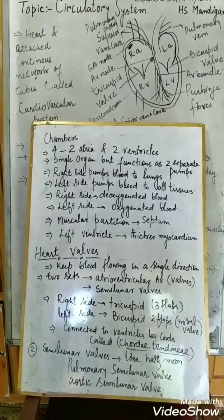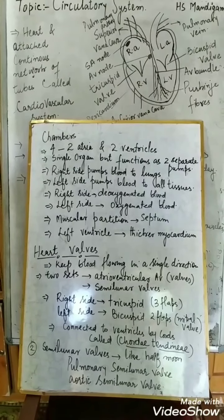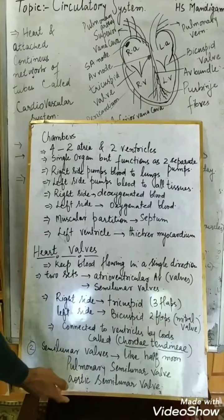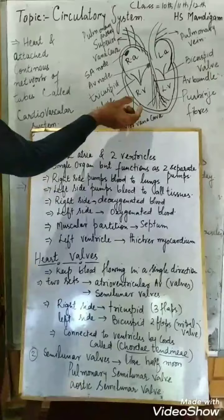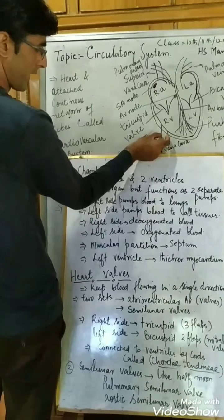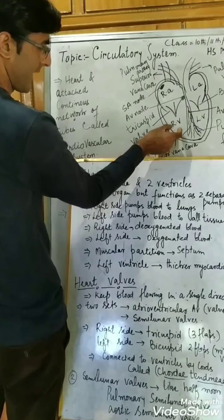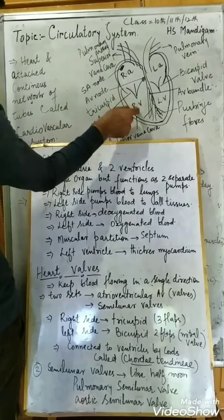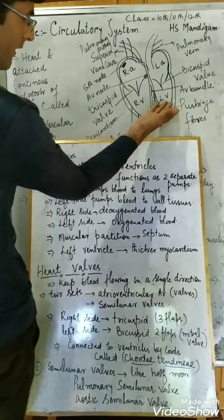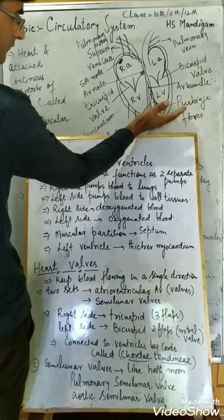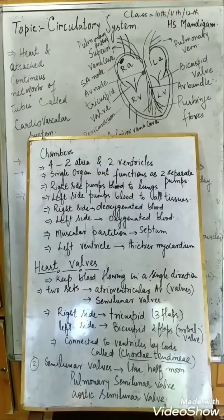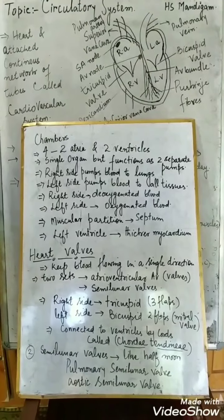The second set of valves are the semi-lunar valves. There are two: the pulmonary semi-lunar valve, present where the pulmonary trunk connects with the right ventricle — preventing blood from flowing back into the right ventricle — and the aortic semi-lunar valve, present at the base of the aorta, preventing oxygenated blood from flowing back into the left ventricle. These valves resemble the shape of a half moon.